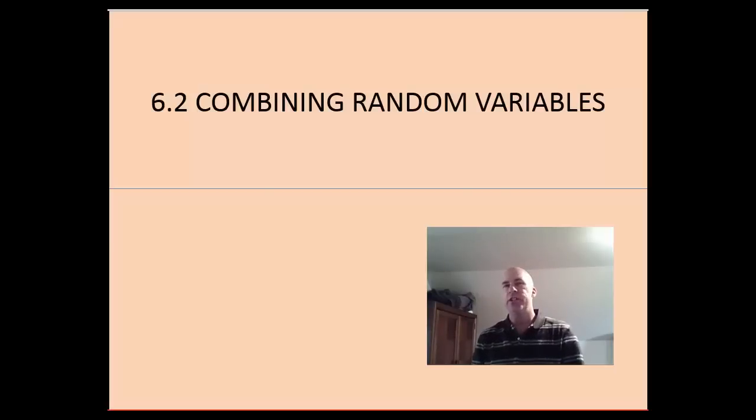Hi everybody. This video is for section 6.2, Combining Random Variables. In this video we're going to take a look at rules for when we have one or more random variables that we might be interested in transforming or combining together. We have three example problems today to look at.